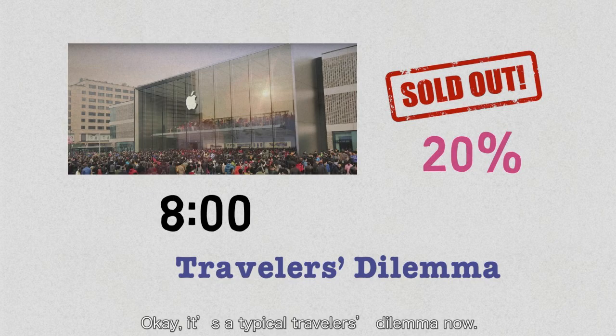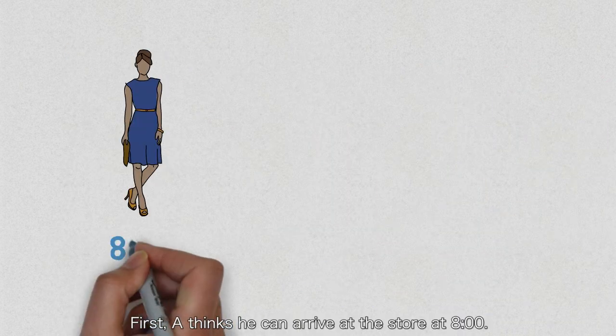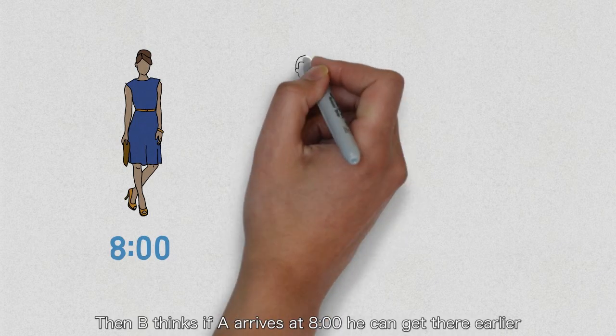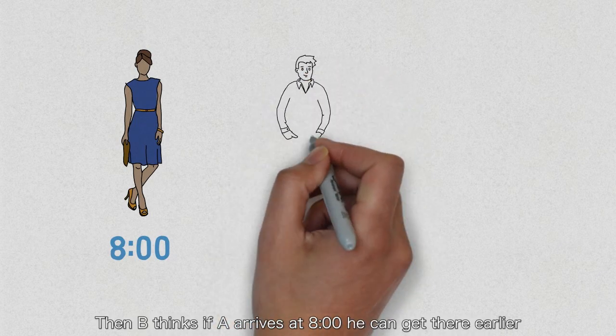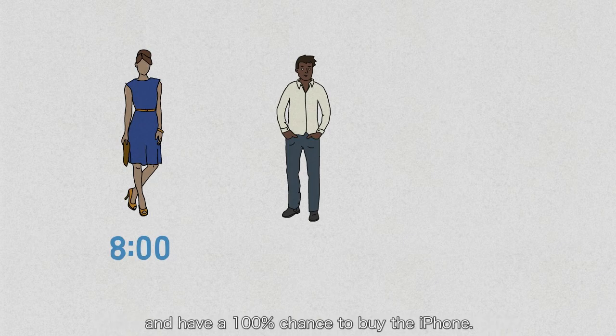Okay, it's a typical Traveler's Dilemma now. First, person A thinks he can arrive at the store at 8 o'clock. Then person B thinks if A arrives at 8 o'clock, he can get there earlier and have a 100% chance to get an iPhone. So he will arrive at the store at 7:59.